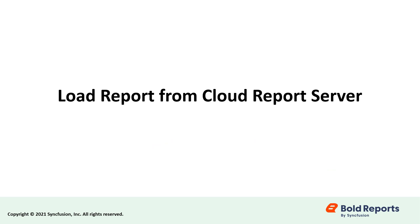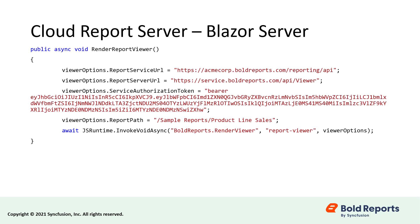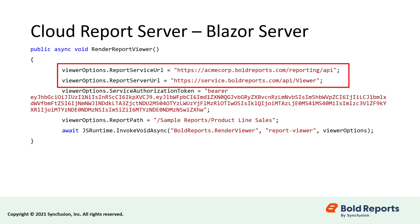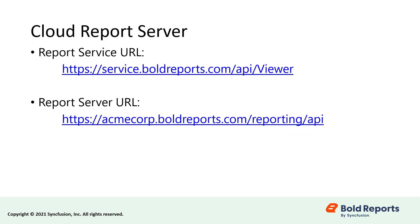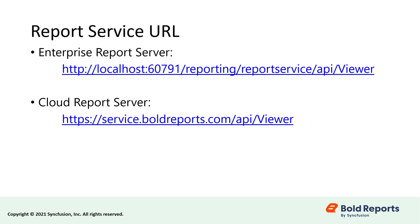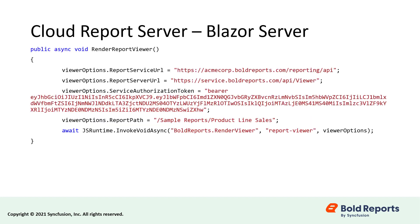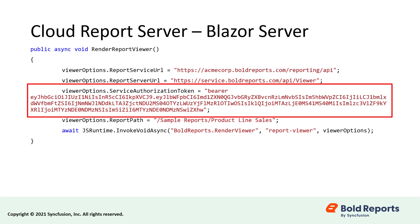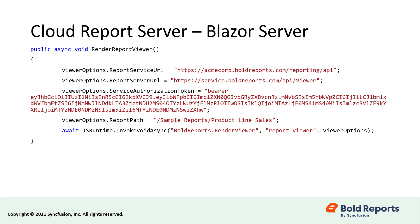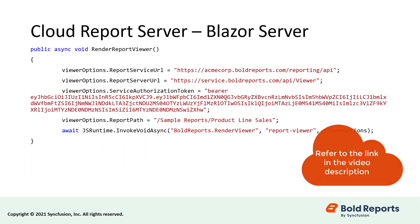Let's briefly cover the procedure for loading a report from the cloud report server. The steps are the same, but the report service URL and report server URL will differ based on your cloud server configuration. Since the service for cloud reporting is hosted separately, 'reporting/reportservice' is not set in the report service URL. And since multi-tenancy is not supported in the cloud reporting server, the site information is not required in the report server URL. You also need to generate the service authorization token from the cloud report server and add it in the application, along with the path of the report to render. I have provided the documentation link in the video's description for your convenience.